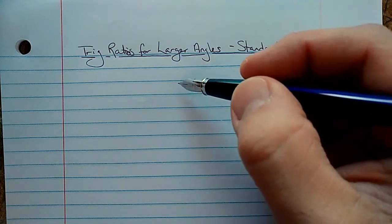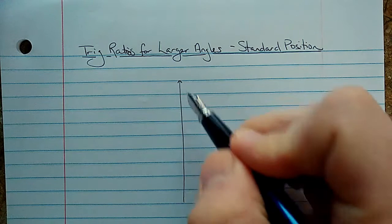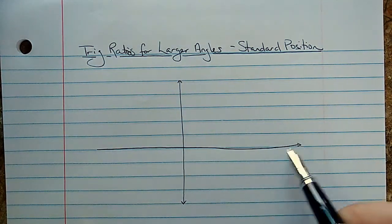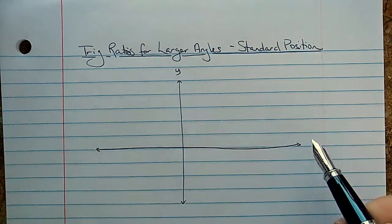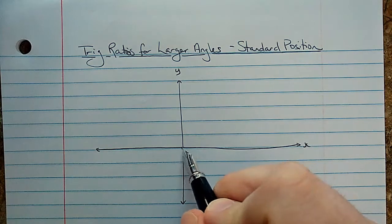So I'm just going to do a quick little sketch here of a set of xy axes. So there's y, there's x, this is the origin right here, 0, 0.